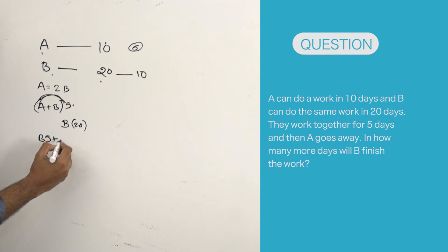So when A and B worked together for 5 days, total 15 days work of B is finished. Total work is already known as 20 days B's work, so B has to work for another 5 days to finish the work.